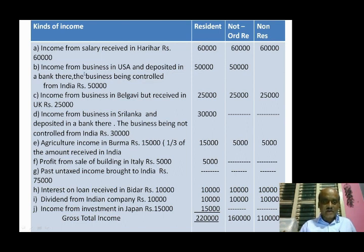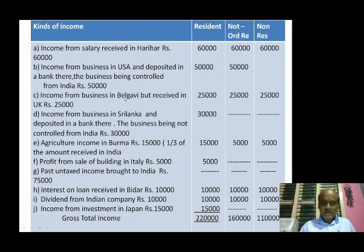Next, income from business in USA deposited there in a bank, and the business being controlled from India. This is 50,000. For income from business in Belgium, it is earned outside India but business controlled from India — taxable for resident and NOR but not for non-resident.